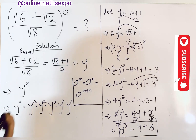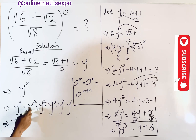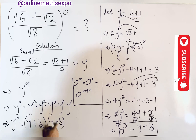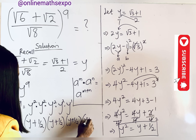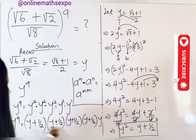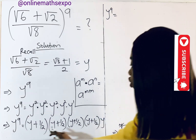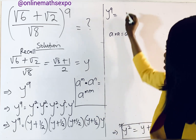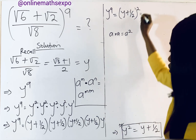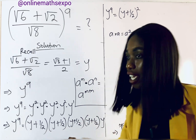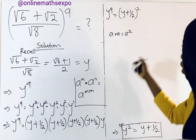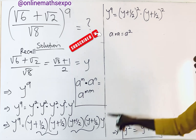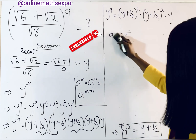Replacing each y² with (y plus one half), we have y⁹ equals (y + 1/2)(y + 1/2)(y + 1/2)(y + 1/2) times y. Since we have four identical factors, we can write it as (y + 1/2)² times (y + 1/2)² times y. We will use the binomial formula (a+b)² = a² + 2ab + b² to expand.